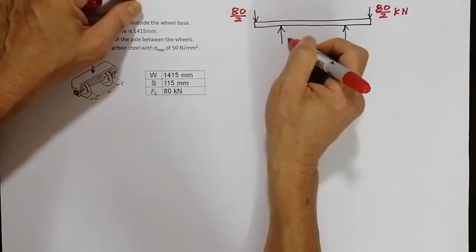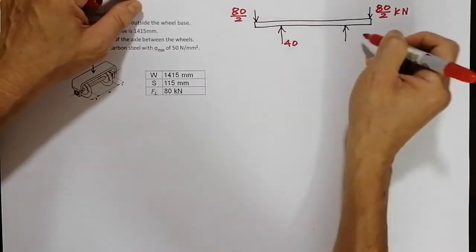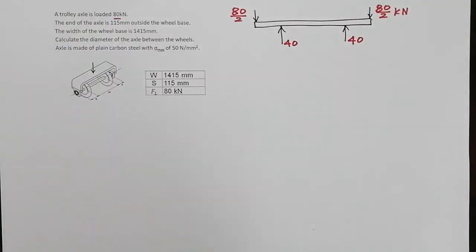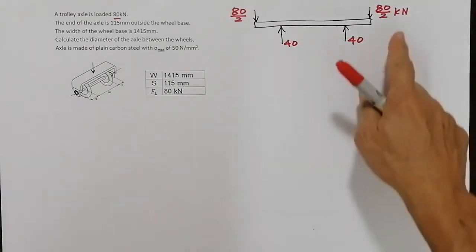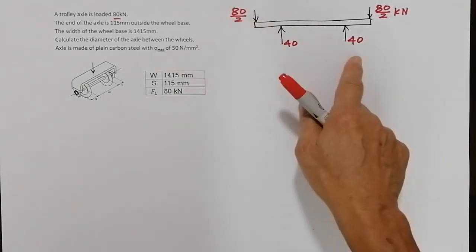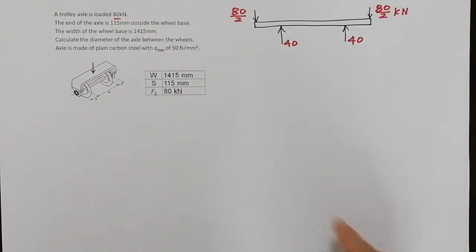So the reaction force will be 40 kilonewtons, 40 kilonewtons. You don't need to do any calculation for this simple beam because it is only single value. There are 40 here, 40 here, so they're equally spaced, so intuitively you know that it should be 40, 40 here to balance. Upward force equal to downward force.